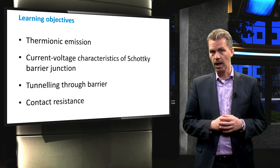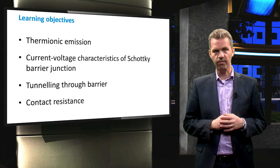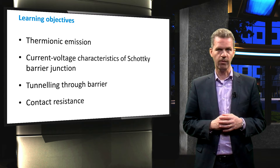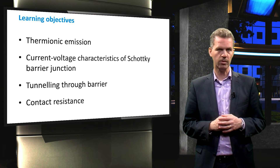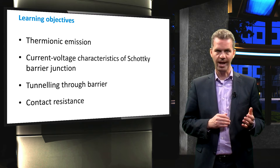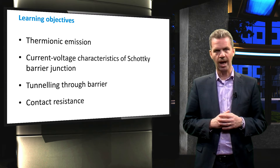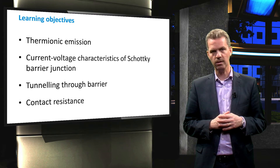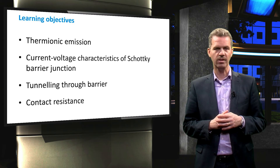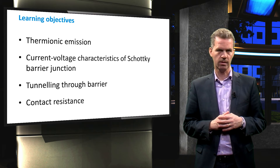In this video we will focus on the current flow across the junction. In order to understand the underlying physics, we first discuss the process of thermionic emission. We will then discuss how the current flow can be influenced by invoking the tunneling process and how this affects the contact resistance.